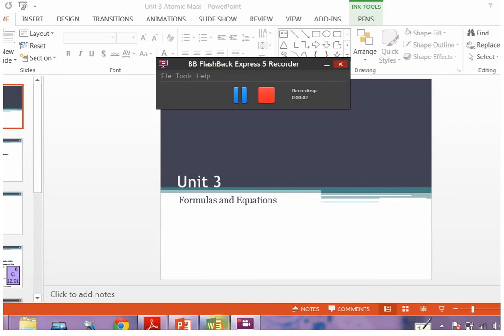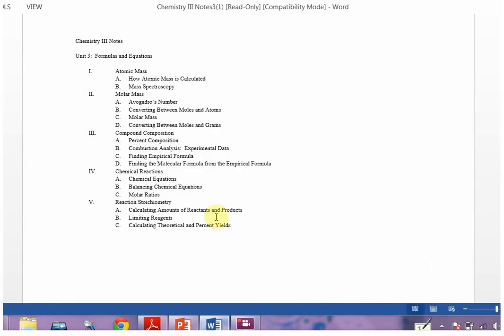Okay, so this is unit 3. For this unit, we actually start to combine the unit 1 dimensional analysis, sig figs, and the formulas we learned and talked about in unit 2 into chemical reactions and chemical equations.